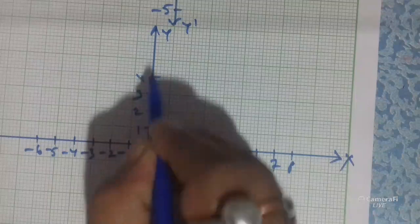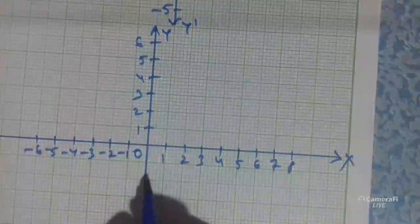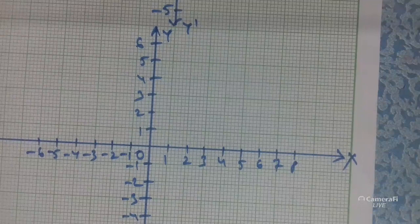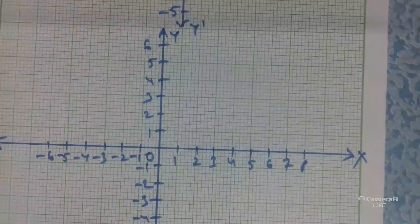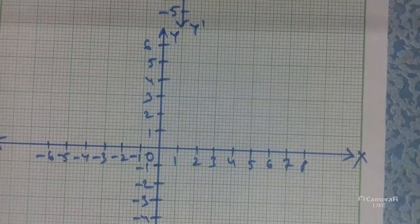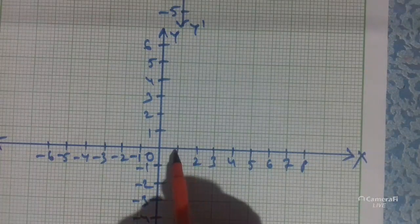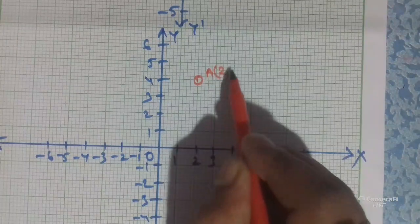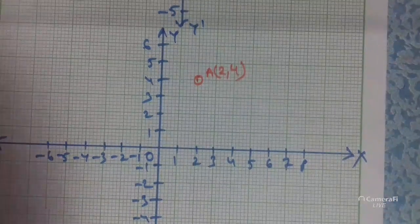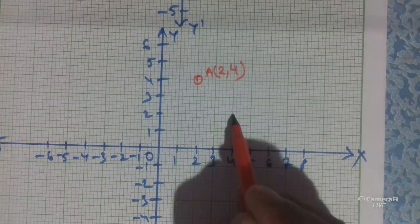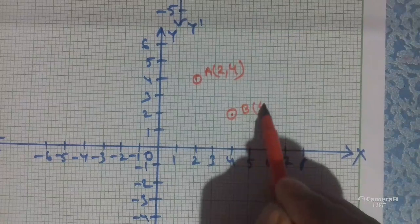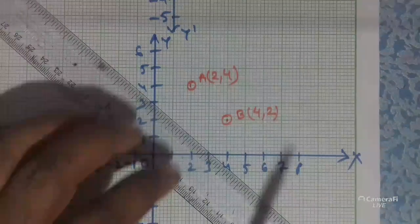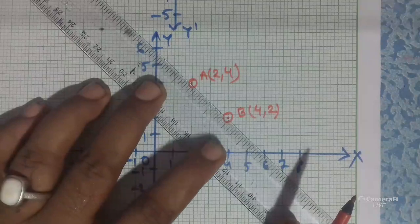As you know, opposite sides of a rectangle are equal, so we draw the sides such that opposite sides are equal. The fourth point D can be seen at coordinates (4,4). So our required fourth point is D(4,4). I hope all of you understood.